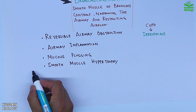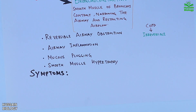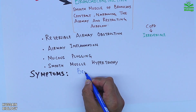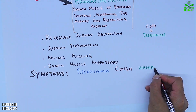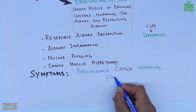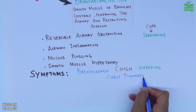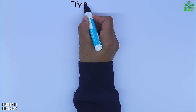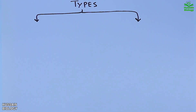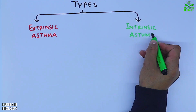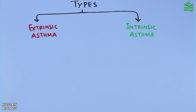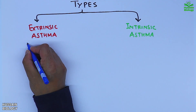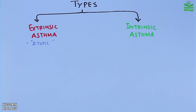The major symptoms of asthma include breathlessness, cough, wheezing, and chest tightness. Now let's see its types. We have extrinsic and intrinsic types of asthma. The extrinsic asthma is also termed as atopic asthma.